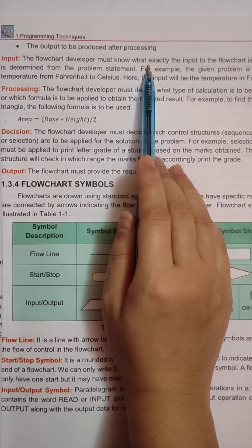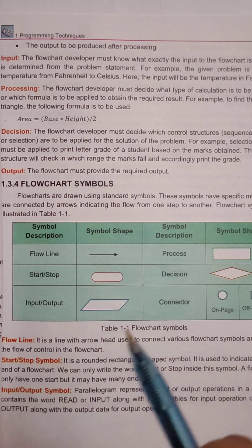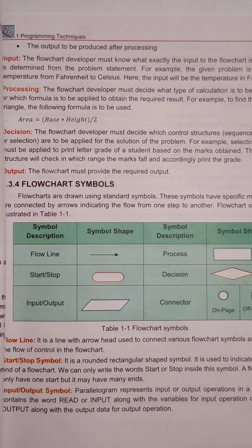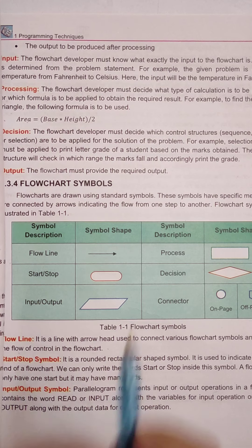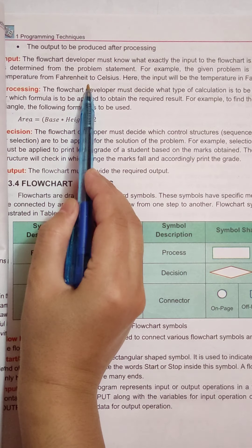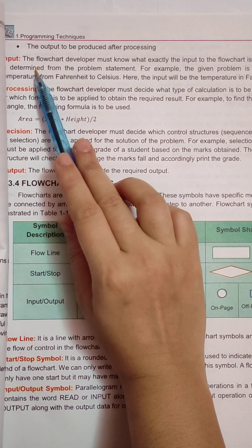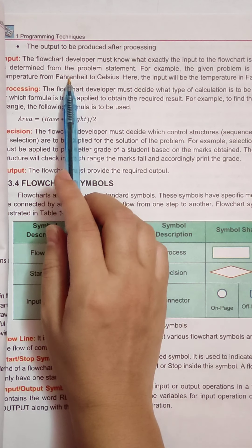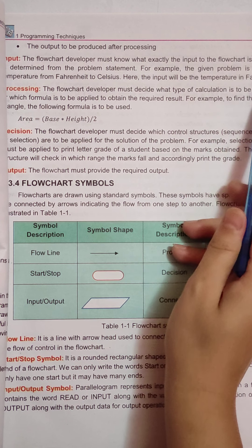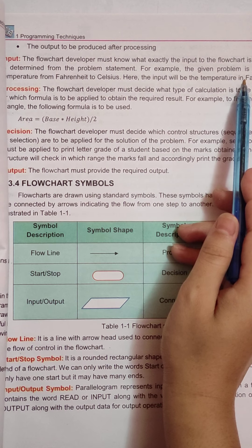The flowchart developer must know exactly what the input to the flowchart is. When you enter input, you should know what you are giving as input. The input is determined from the problem statement. For example, the given problem is to convert temperature from Fahrenheit to Celsius. From this problem, the input is determined — the input will be temperature in Fahrenheit. If I give the Fahrenheit temperature, then I will convert it to Celsius.